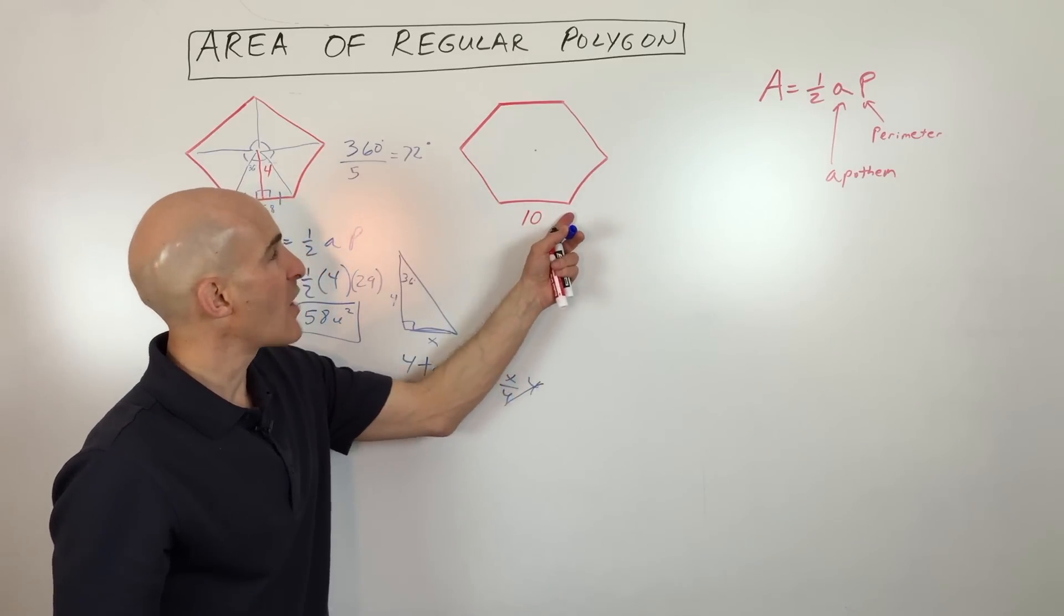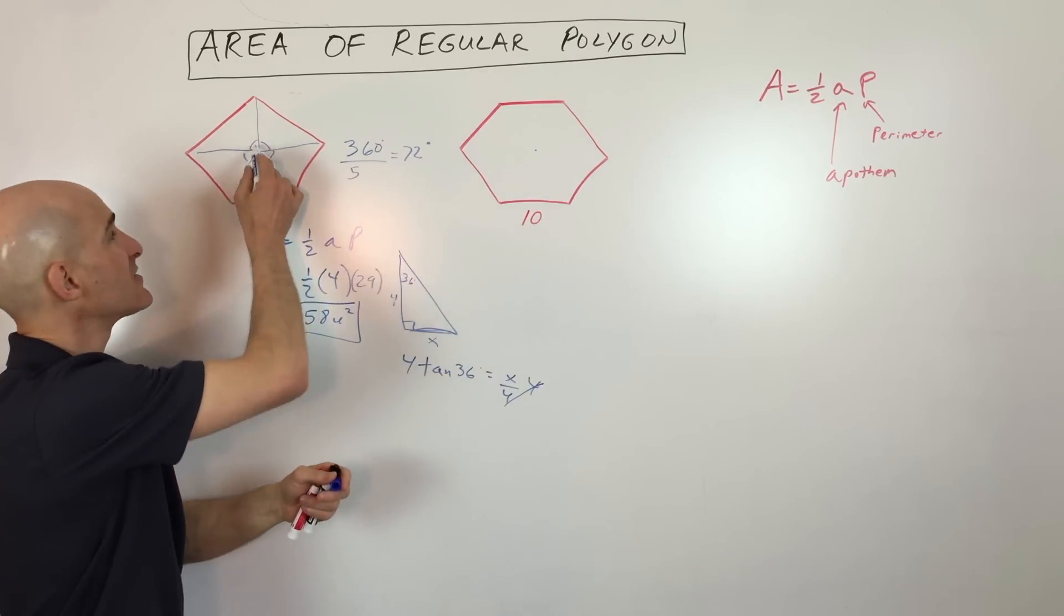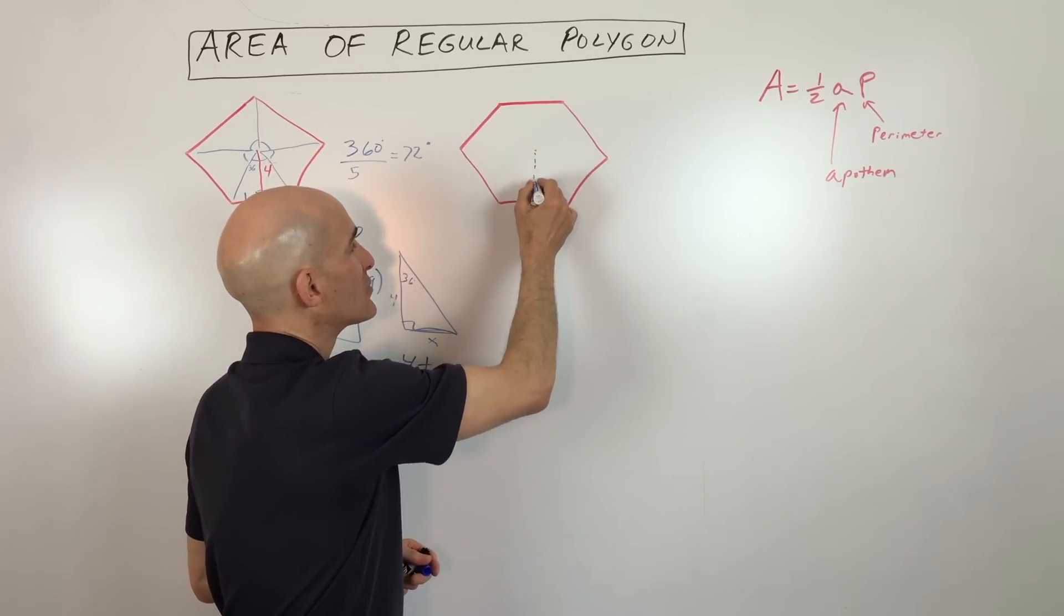But let's get into this next problem. So the next problem, they're giving us the side length. See over here, they gave us the apothem. So when they give you the side length, we need to find that apothem, which is right here.